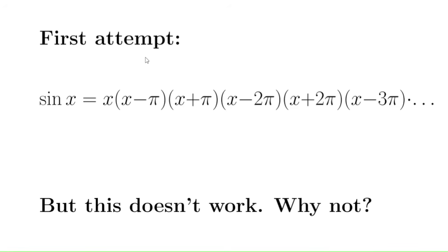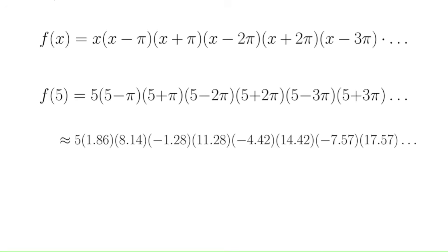Now our first thought might be, well since the zeros of sine are the multiples of pi, let's factor sine like this: sine of x is x times (x minus pi) times (x plus pi) times (x minus 2pi) times (x plus 2pi) and so on. But there's a real problem with this approach, and Euler knew about this problem and had to fix it. So if we let f(x) be defined by x times (x minus pi) times (x plus pi) and so on, and if we just plug in a number for x.